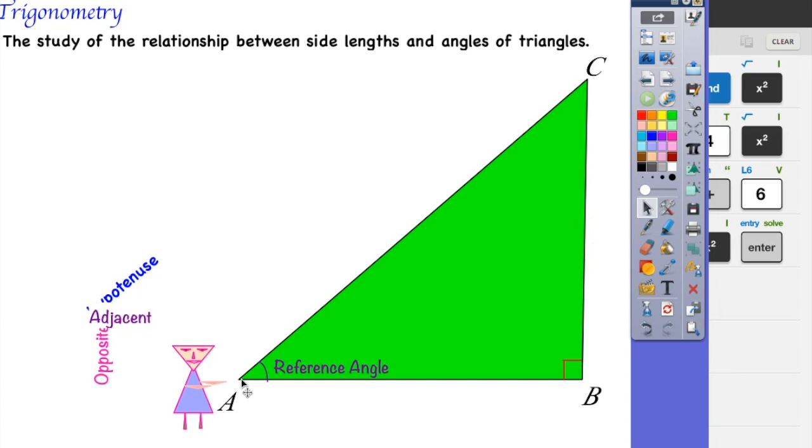So I can have side AC, and we're going to name side AC the hypotenuse because it's the side that is across my 90-degree angle.